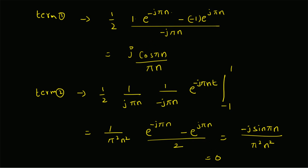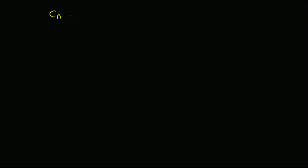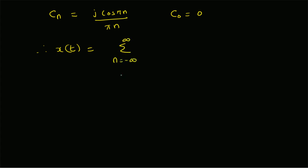Hence, cₙ is equal to term 1. Therefore, the Fourier coefficient is cₙ equals j times cos(πn) divided by π·n, and for n equal to 0, c₀ is 0. The complex Fourier series expansion of x of t is the summation n equals minus infinity to plus infinity, n not equal to 0, of j times cos(πn) divided by π·n — and since cos(πn) equals (minus 1)ⁿ — times e to the power j·π·n·t.